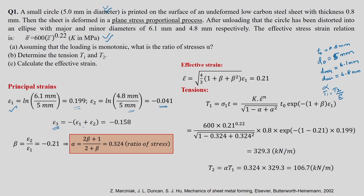Epsilon_3 equals minus of (epsilon_1 plus epsilon_2). To get alpha we need beta first. Beta equals epsilon_2/epsilon_1, which is minus 0.041 divided by 0.199, giving minus 0.21. From beta, alpha is found to be 0.324. Effective strain epsilon_bar equals the square root of (4/3 times (1 plus beta plus beta squared)) times epsilon_1. Substituting beta gives epsilon_bar equal to 0.21.